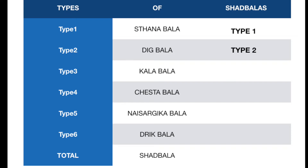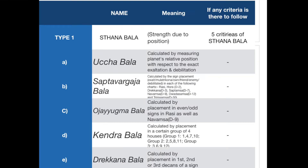The first Shat Bala is Sthana Bala — strength due to position. In Sthana Bala there are five criteria: Uccha Bala, Sapta Varga Ja Bala, Oja Yugma Bala, Kendra Bala, and Drachana Bala. Uccha Bala is calculated by measuring a planet's relative position with respect to its exact exaltation and debilitation points in the signs. If Sun is exalted it's called Uccha Bala; if debilitated it's called Neecha Bala.